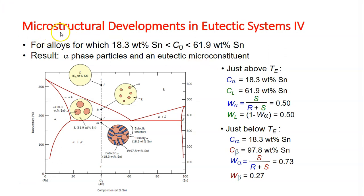Now we are considering the final microstructural case for eutectic systems. This is for alloys in the range of 18.3 weight percent Sn until 61.9 weight percent Sn.